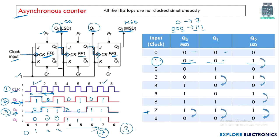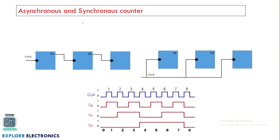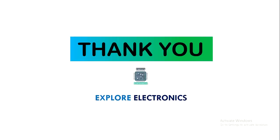The maximum value of a three-bit counter is 111, which is seven. The difference between synchronous and asynchronous counters lies in the clock signal. In an asynchronous counter, the clock feeds only the first flip-flop with subsequent flip-flops clocked by the previous output. In a synchronous counter, the same clock is shared by all flip-flops. The count sequence generated is the same in both cases. Thank you.